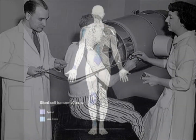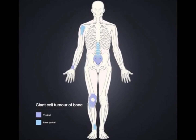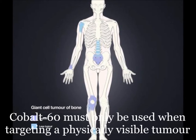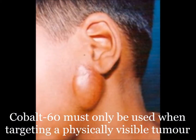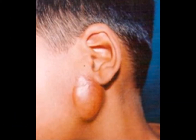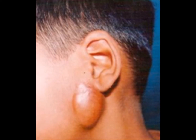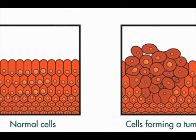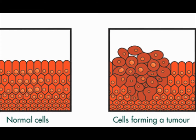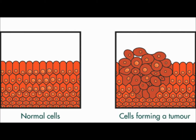The benefits of using cobalt-60 include the fact that it can be used on any part of the body because of its precision. The risk of getting cancer from the isotope decreases slightly because of this precision, meaning greater amounts of radiation can be exposed to a specific location — the tumour — with less damage to the surrounding healthy tissues and organs.